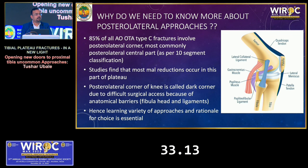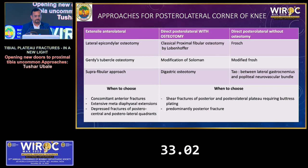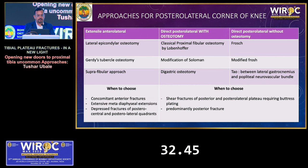The posterolateral corner is called the dark corner of the knee because of difficult surgical access and anatomical barriers like the fibular head and various ligaments. Common approaches for the posterolateral corner include: extensile anterolateral, lateral epicondylar osteotomy, Gerdy's tubercle osteotomy, and the suprafibular approach. These are chosen when there is a concomitant anterior fracture along with posterior or posterolateral fracture, extensive metaphyseal extension, or a depressed fracture of the posterior central and posterolateral quadrants.